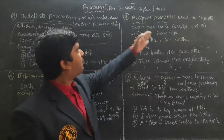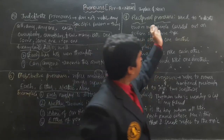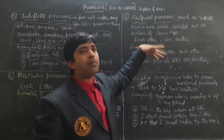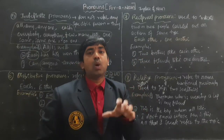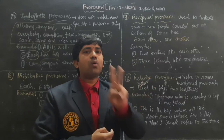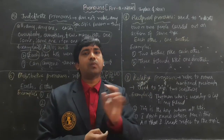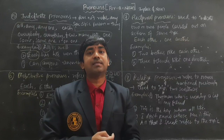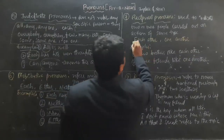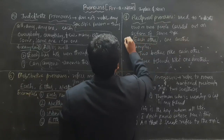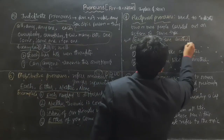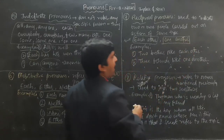Reciprocal Pronouns indicate two or more persons. We have only two Reciprocal Pronouns: 'each other' and 'one another.' 'Each other' is used for two people, and when there are more than two, we use 'one another.'